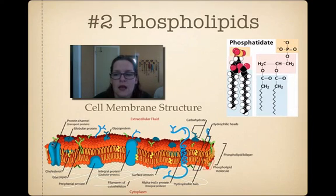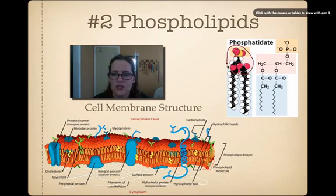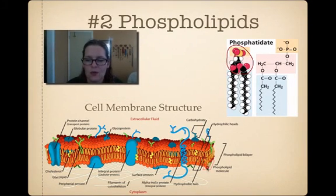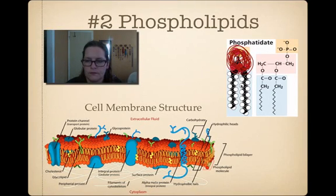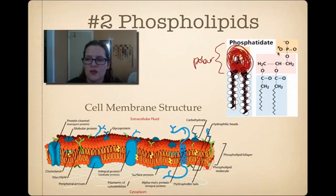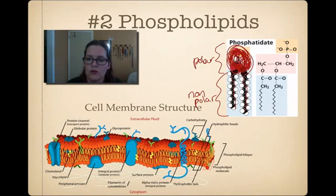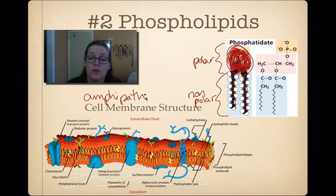The second group are phospholipids, and what you need to be aware of is that phospholipids are what we call amphipathic. Looking at this little ball with two little legs - this area up here is polar, as you can tell by the phosphorus and lots of oxygen. The chains down here are nonpolar. When a molecule has regions that are strongly polar and strongly nonpolar, we call it amphipathic, meaning it's both polar and nonpolar.